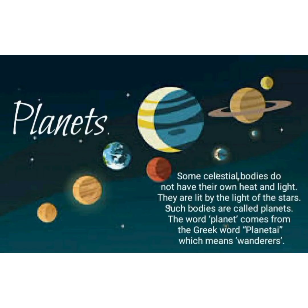Now we come to planets. Stars have their own light — they are very big and hot and emit light in a very large amount. But there are some celestial bodies that do not have their own heat and light, and such bodies are known as planets. The word planet comes from the Greek word 'planetia' which means wanderers. Planets do not have their own light and they get light from stars.